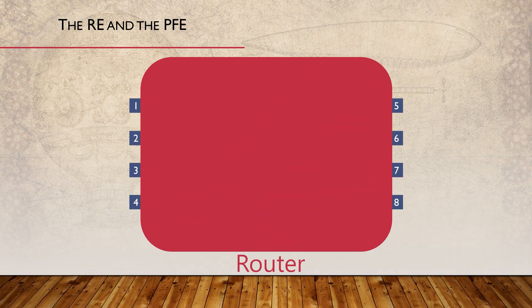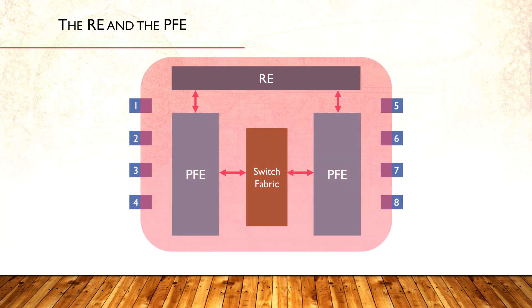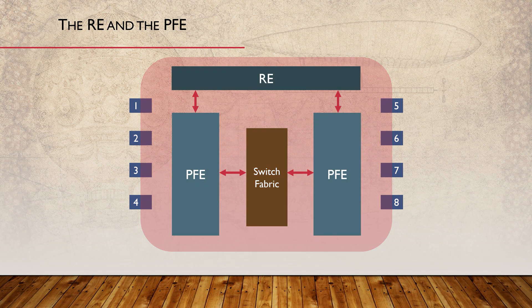Let's start by looking at this router. It has a few interfaces or ports. Packets flow into one interface, called the ingress interface, and flow out of another interface, the egress interface. Inside the router, we can see that it is divided into two parts. One is called the routing engine, or RE, which handles exception traffic. The other is the packet forwarding engine, or PFE, which handles transit traffic. The RE is the component that handles control plane traffic. The PFE is the data plane.